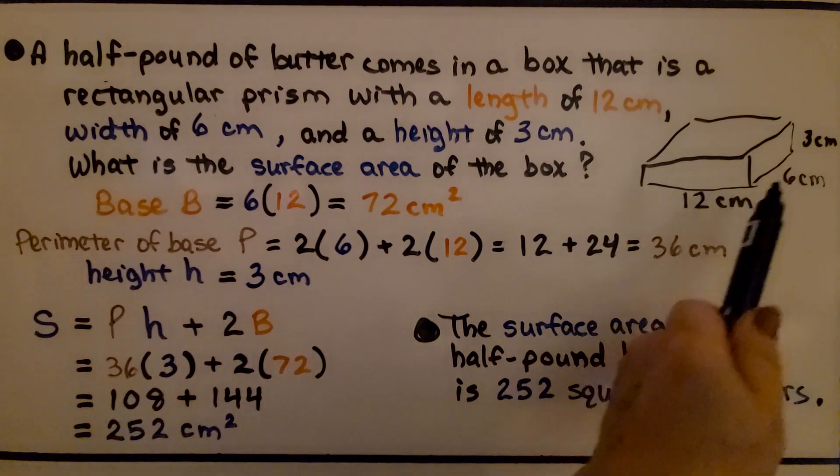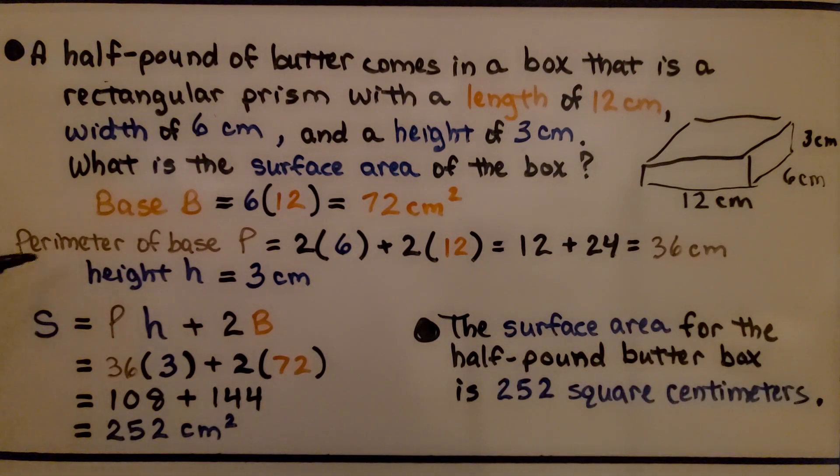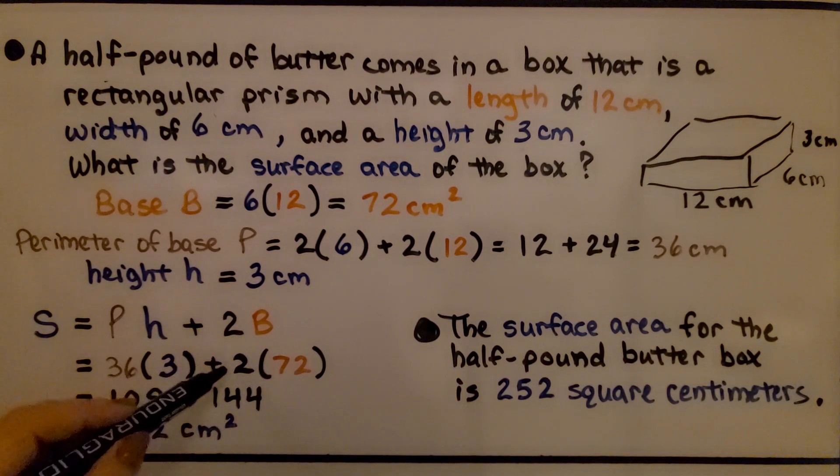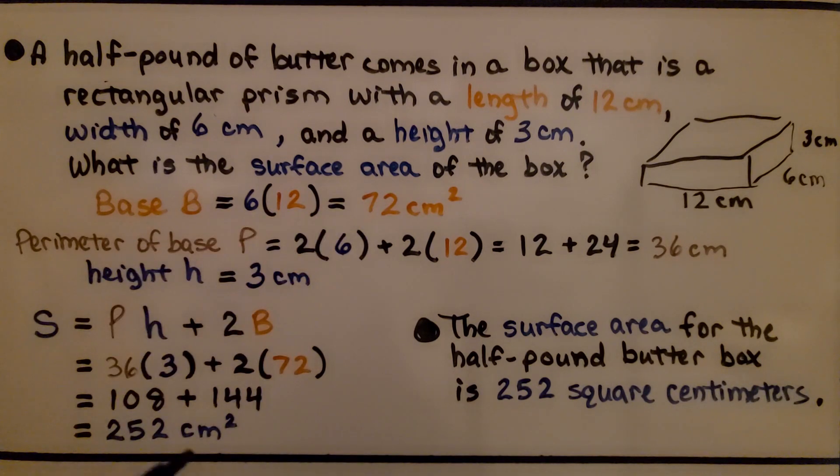Our height is 3 centimeters. Now we can use the formula. The surface area equals the perimeter of the base times the height plus 2 times the base area. The perimeter of the base was 36 times the height of 3, giving us 108, and 2 times the base area would be 2 times 72, which is 144. We add them together and find the surface area is 252 centimeters squared.